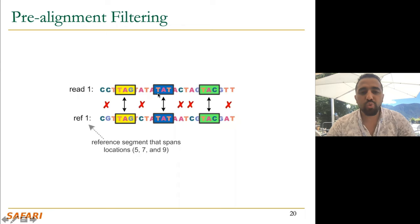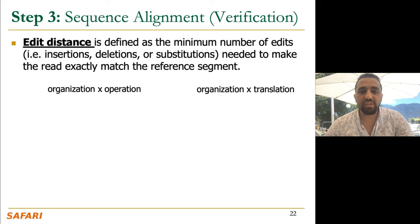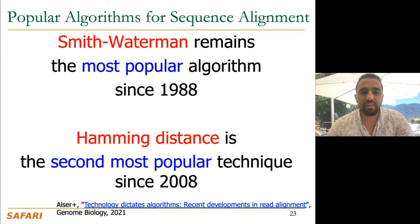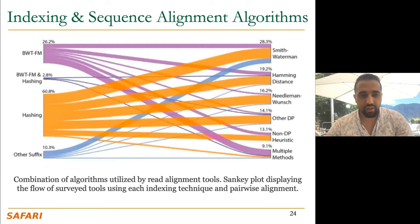You can also apply sequence alignment between two chains of seeds — that's what we call sparse dynamic programming, where you don't apply dynamic programming end-to-end from the very first base to the last base, but apply it between the chains, given that the chains already exactly match between the two sequences. For sequence alignment, we find that Smith-Waterman remained the most popular algorithm since 1988, and Hamming distance was the second most popular algorithm.